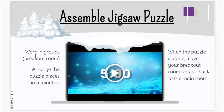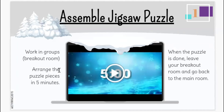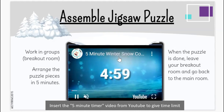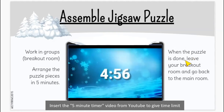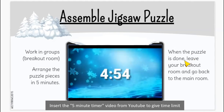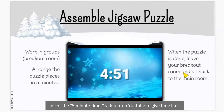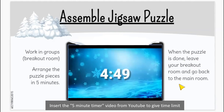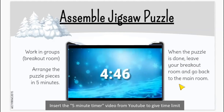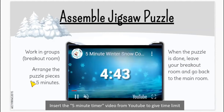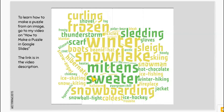Students will work in groups, so teachers can send them into different breakout rooms. Inside the room, they work together with their group members to arrange the puzzle pieces in five minutes. You can time them using a video, and when the puzzle is done or the time is finished, students can leave the breakout room, go back to the main room, and the teacher can see which group is the winner. You can show them the finished image so students know what to expect.